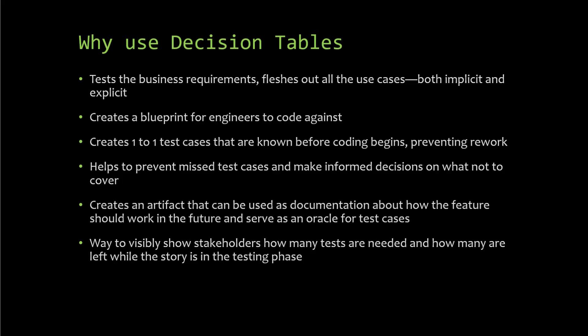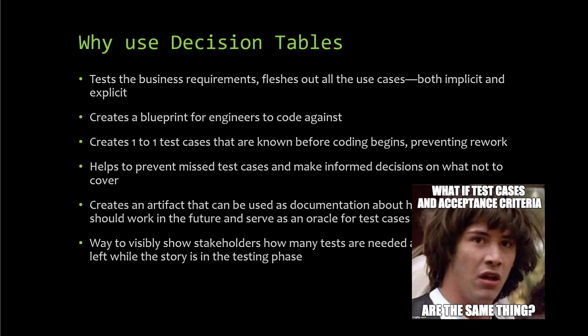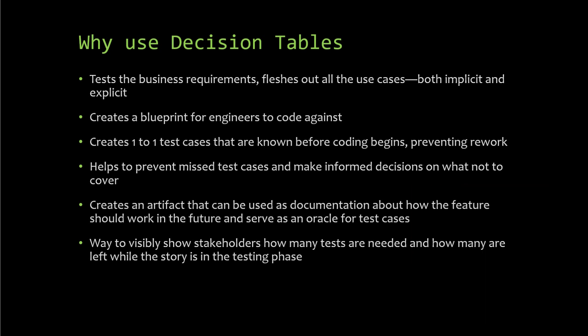So why use decision tables? Through the act of creating one, it actually ends up testing the business requirements by fleshing out all the use cases, both implicit and explicit. It creates a blueprint for your engineers to code against, and creates one-to-one test cases that are known before coding begins, preventing rework later. It helps prevent missed test cases and supports informed decisions on what not to cover. It also creates an artifact that can be used as documentation about how the feature should work in the future and serves as an oracle for test cases. Lastly, it's a way to visibly show stakeholders how many tests are needed and how many are left while the story is still in the testing phase.